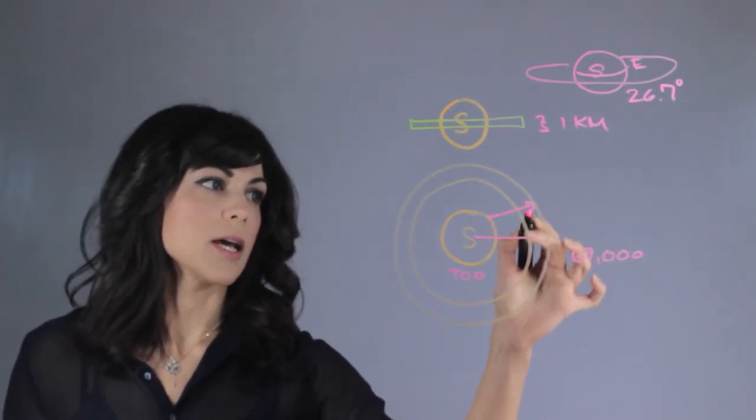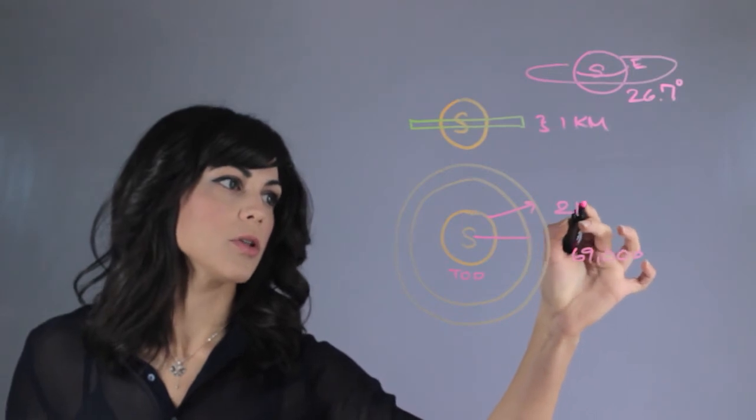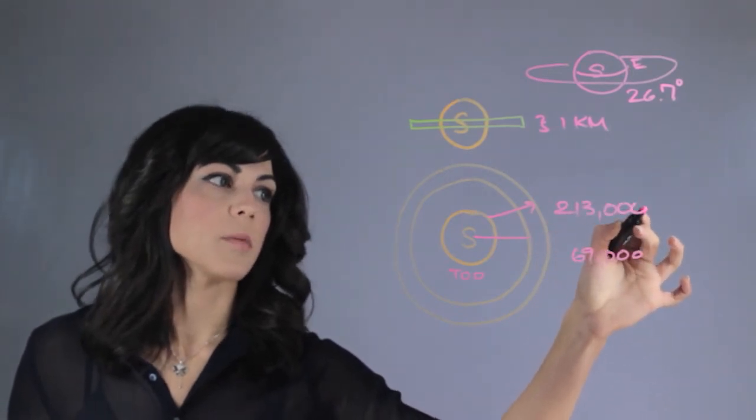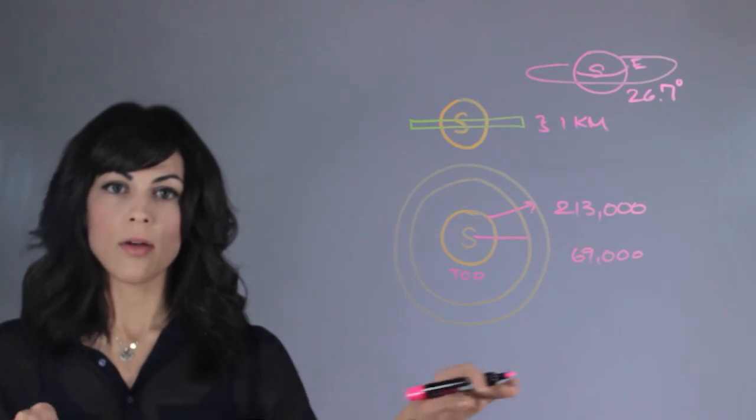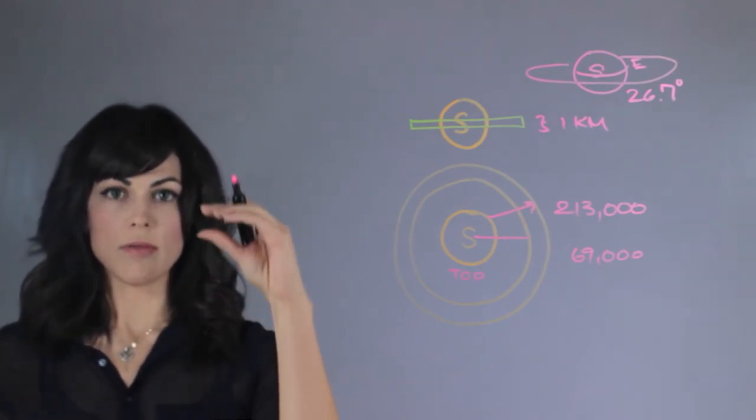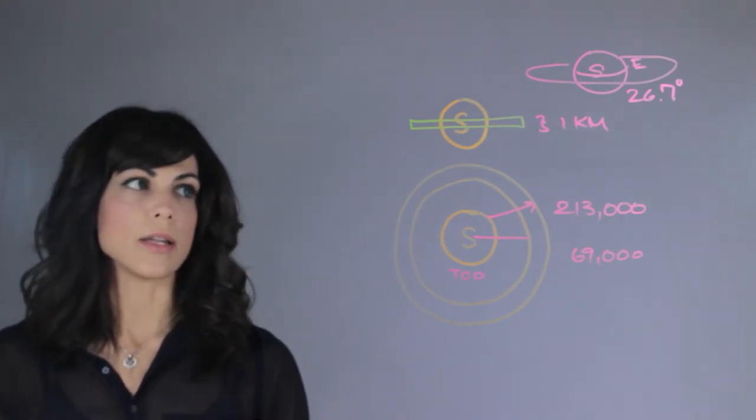And they can extend to an outer radius of 213,000 kilometers. So as you can see, they extend for very long, but they're actually very thin on the side view.